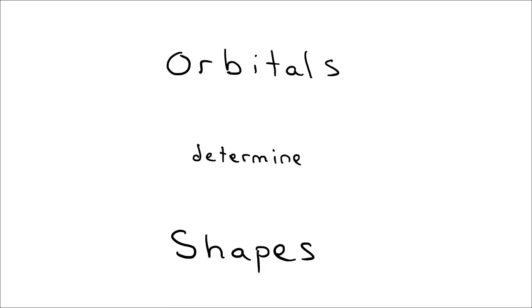Now the orbitals around a central atom determine the shape of a molecule, because different atoms stick together when their orbitals overlap. So whatever direction their orbitals are pointing in, that's where another atom is going to connect. And that will give you the shape of the molecule. So orbitals determine shapes.